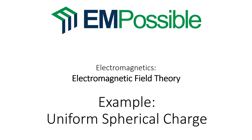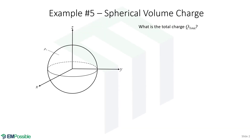Uniform spherical charge. Following our previous examples, the first question is: what is the total charge? We'll follow the recipe outlined in the notes. The first step is to draw the problem. We've drawn a sphere over to the left, and it has a uniform volume charge density, rho sub v. Let's choose a coordinate system — spherical, since it's a sphere. That makes sense.